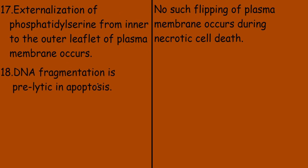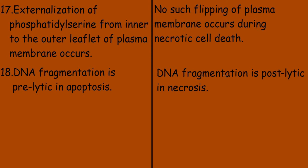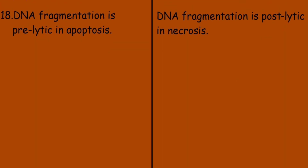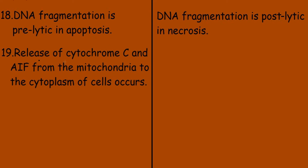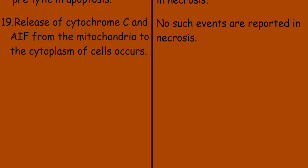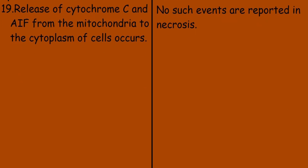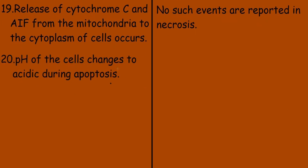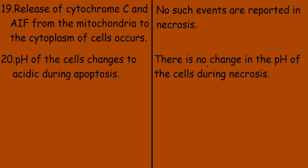DNA fragmentation is pre-lytic in apoptosis, while DNA fragmentation is post-lytic in necrosis. During apoptosis, release of cytochrome C and AIF from the mitochondria to the cytoplasm occurs, while no such events are reported in necrosis. The pH of the cells changes to acidic during apoptosis, while there is no change in pH during necrosis.